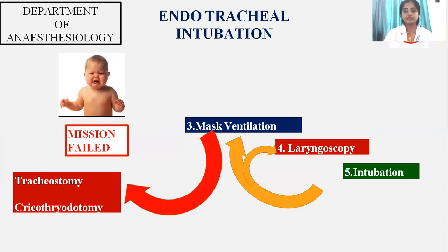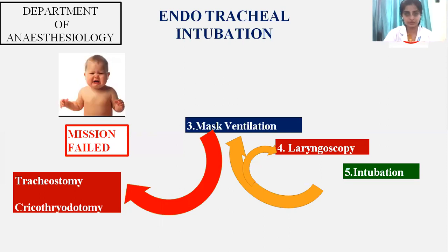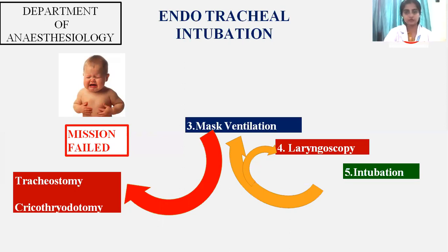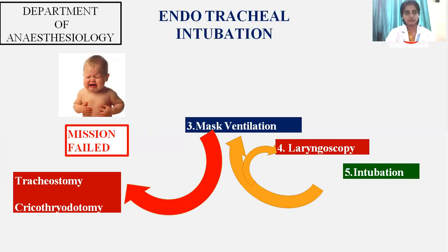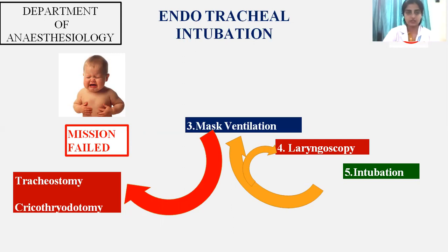In cases of difficult intubation: first attempt mask ventilation, then carry out laryngoscopy and attempt intubation. If intubation is difficult, go for a laryngeal mask airway. If LMA insertion is also difficult, maintain the patient on mask ventilation. When mask ventilation is also difficult, you need to secure the airway via tracheostomy or cricothyroidotomy.